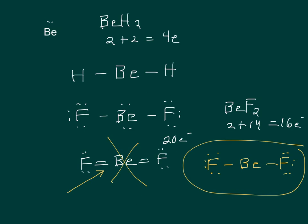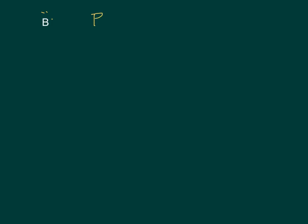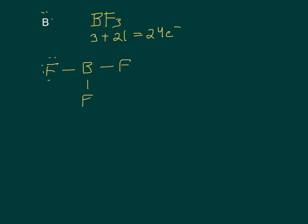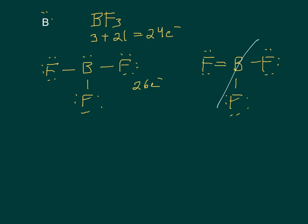It's an exception and you have to memorize it. The same thing happens with boron, which has 3 valence electrons. For example, BF3 has 3 plus 21, which is 24 electrons. The correct structure has boron forming 3 single bonds with no lone pairs. If you forget and give boron extra electrons, you'll count 26 and think you need a double bond — but that is not the correct structure. Boron compounds always have 3 single bonds and no lone pairs.